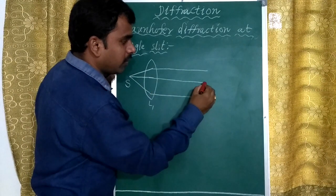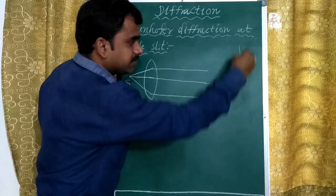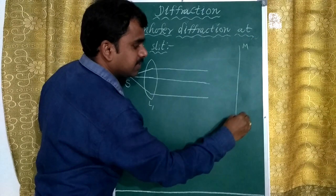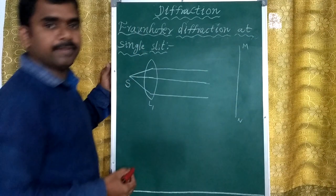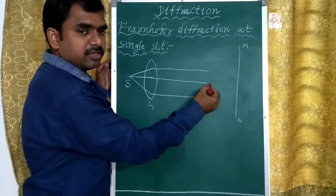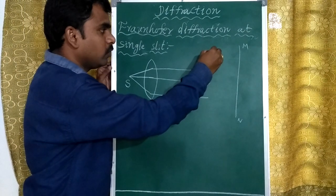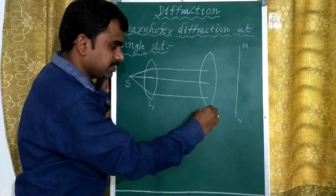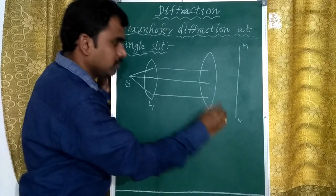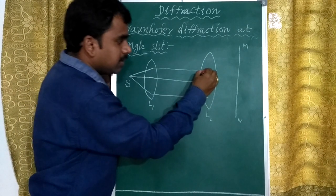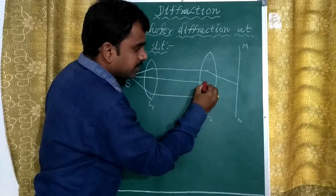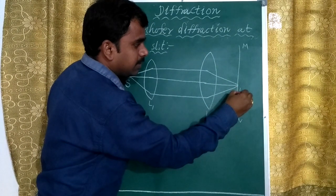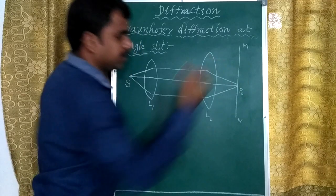We want to focus that parallel beam onto our screen MN. To do that, we take one more lens at the focal length distance. Due to this second lens, all the beams are focused at position P0 — all rays reach P0.